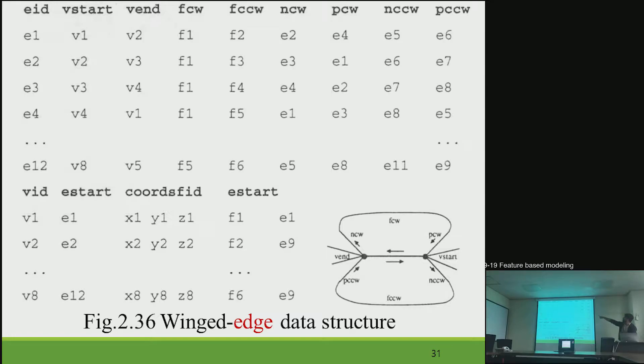You can see that E1 and its associated faces, F1, F2, and its previous two edges, E4, E6, and next E5.